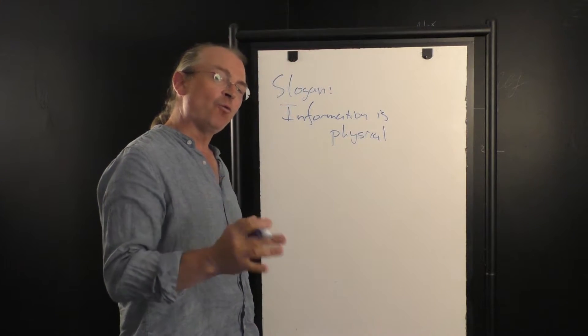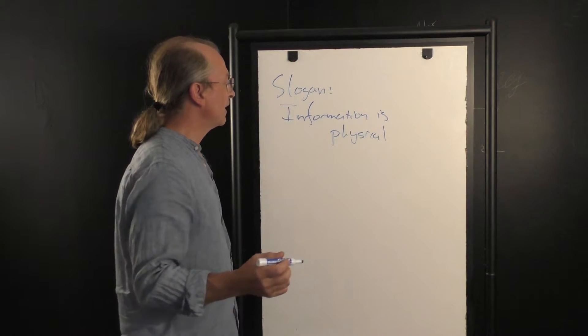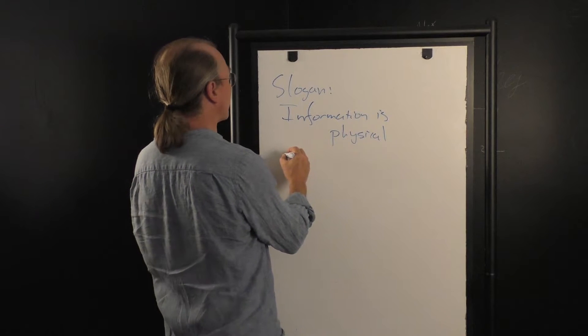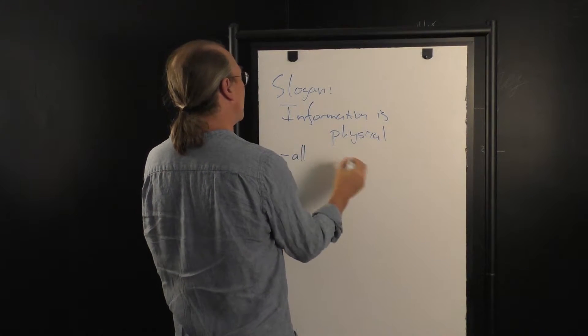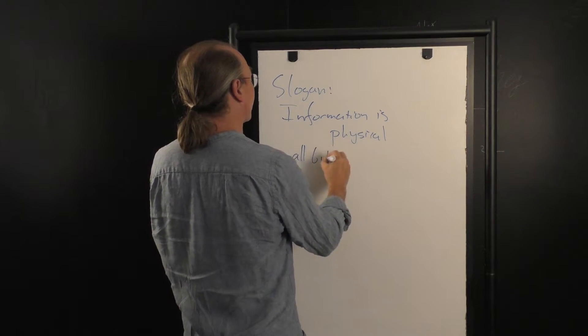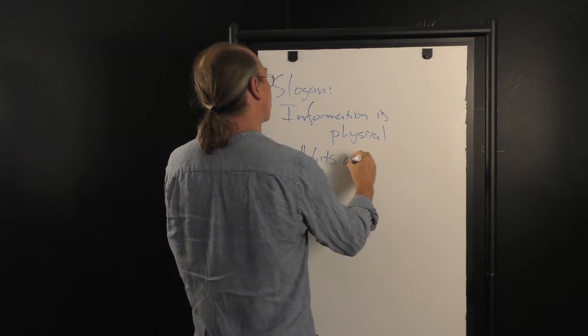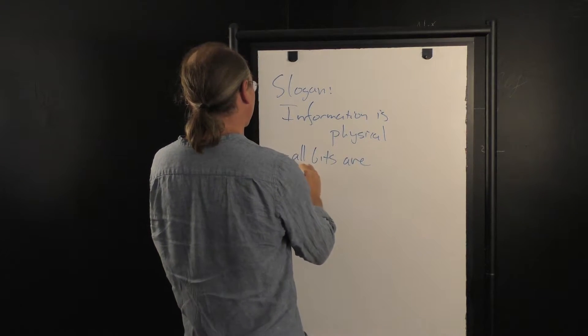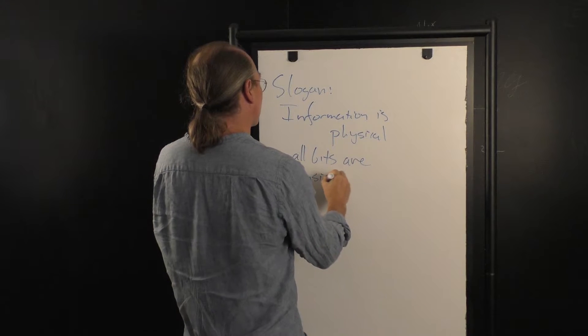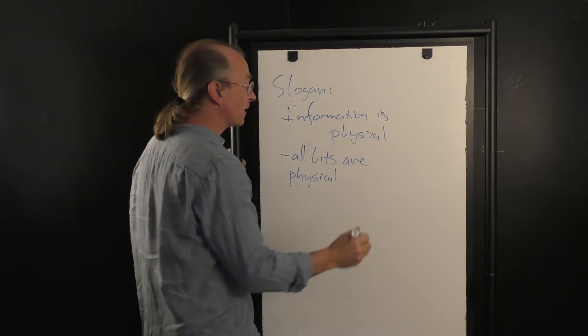But there are two ways to interpret this, both equally valid. One is that all bits we're familiar with are actually physical systems - switches open and closed,